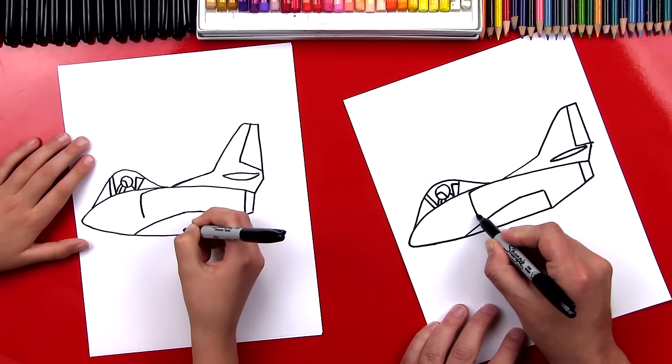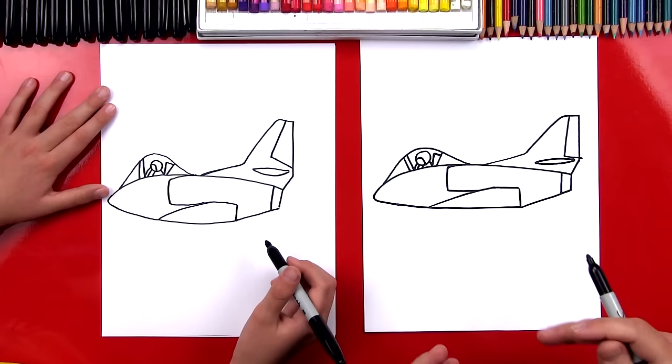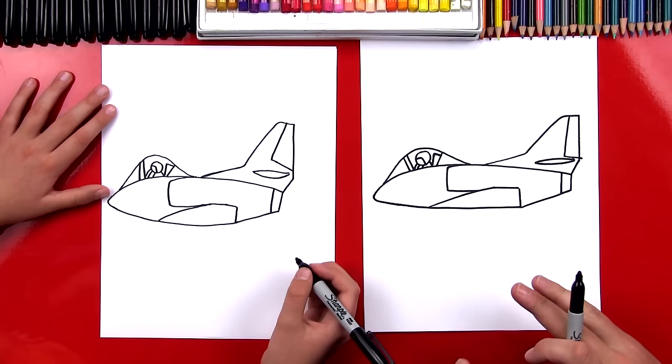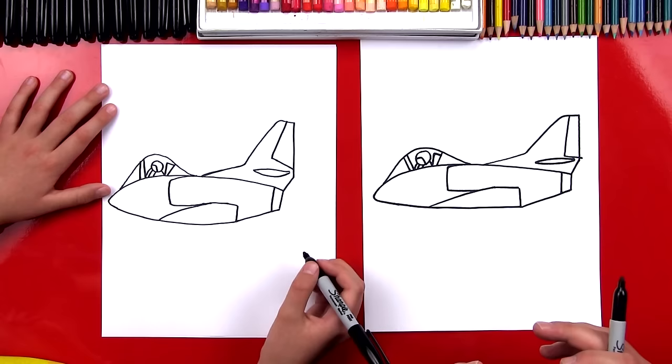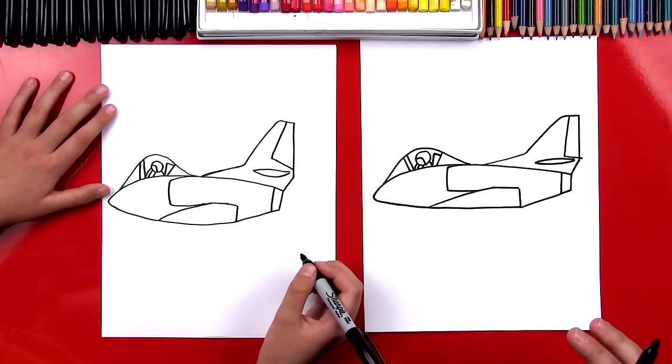All right dude, we finished our jet. He looks awesome. Now you guys can leave it just like this and color them. Now this part we're going to fast forward this next part because we're going to add our own custom details to make our airplanes look even cooler.